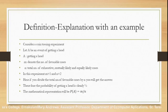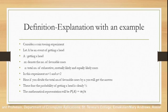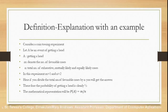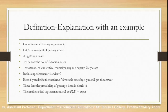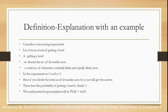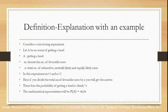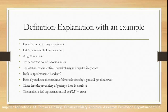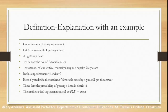For the classical definition of probability, I would like to explain it with the help of an example. Consider the coin tossing experiment. Let A be the event of getting a head. Here, small m denotes the number of favorable cases and small n denotes the total number of cases. In this experiment, the event of getting a head means the favorable cases, so small m will be one.